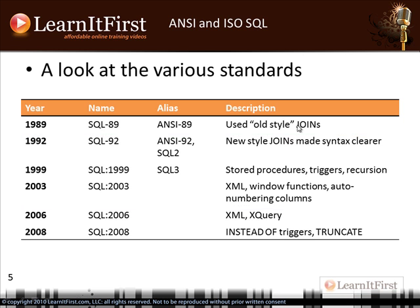Just because something is written in the standard doesn't mean SQL Server implements it exactly as the standard suggests. SQL Server might implement only part of something — the windowing functions are a good example. SQL Server only implements part of that standard specification. The standard will include things like 'you must include this to be considered conformant' or 'you must include part of this to be conforming.'